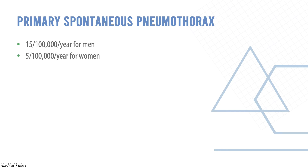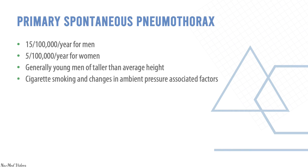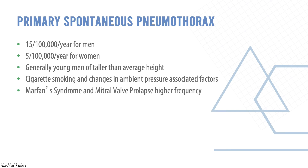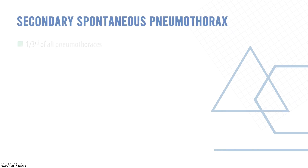Cigarette smoking and changes in ambient pressure are associated factors. Marfan syndrome and mitral valve prolapse have a higher frequency. Primary spontaneous pneumothorax is unrelated to physical exertion. Secondary spontaneous pneumothorax accounts for one-third of all pneumothoraces, with incidence three times higher in men and higher association with COPD. It occurs in 2% of patients with HIV or AIDS, generally in the setting of Pneumocystis carinii pneumonia.